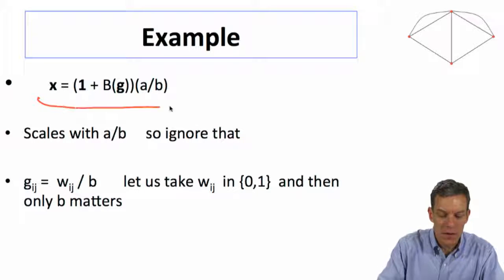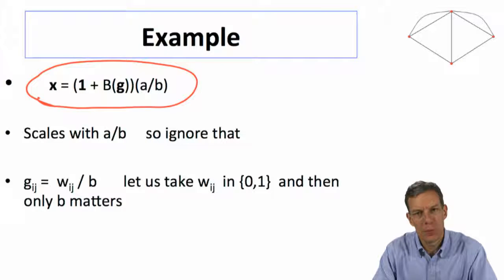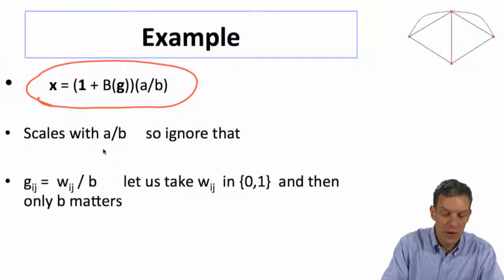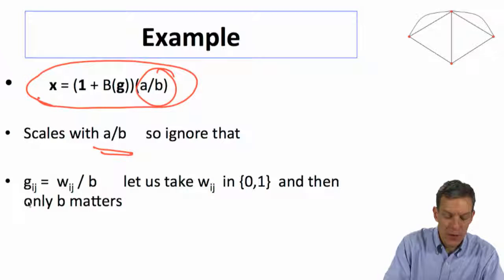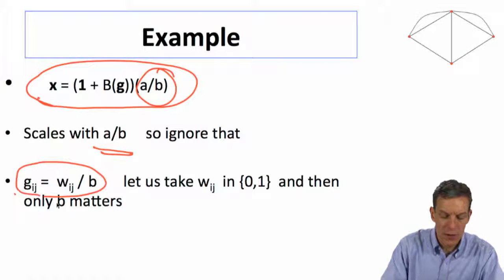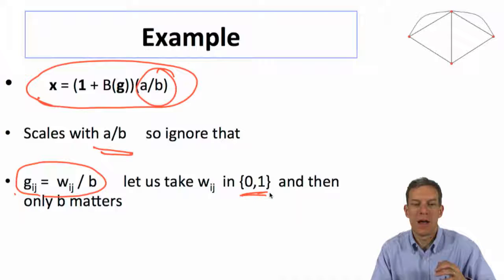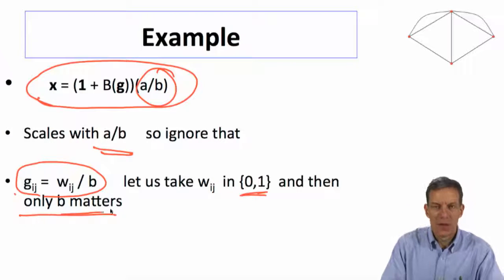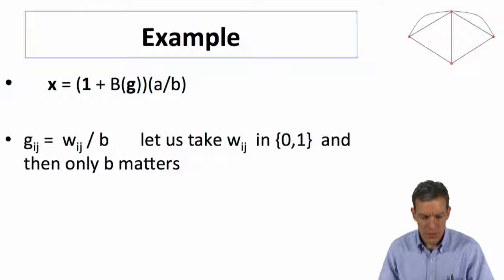Okay. So we've got this nice solution. So the beauty of their model is that you end up with a very simple expression for x. This scales with a over b. So this is just multiplying everywhere. So we can just rescale and eliminate that. So if we think about the gij is equal to wij over b, let's think of a simple world where you're either connected to an individual or not. And then effectively, the main thing is who you're connected to and what's the size of b. And then that will give us a calculation and you can directly estimate these things.